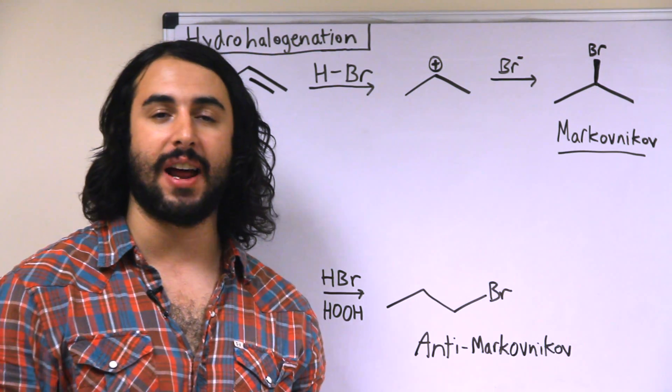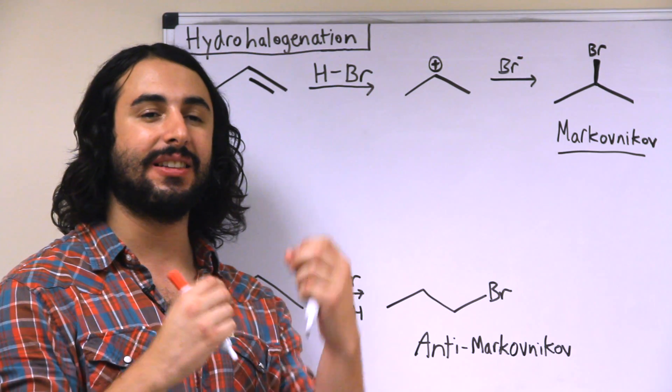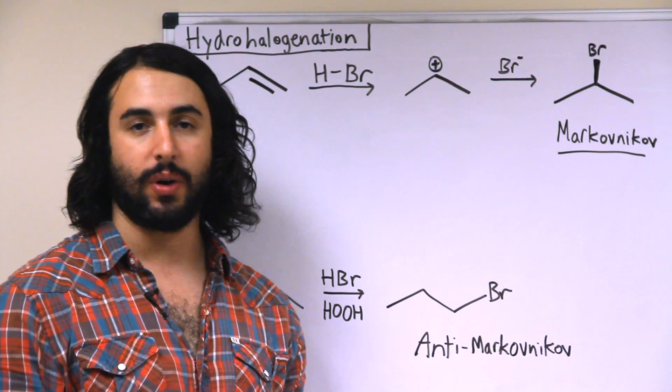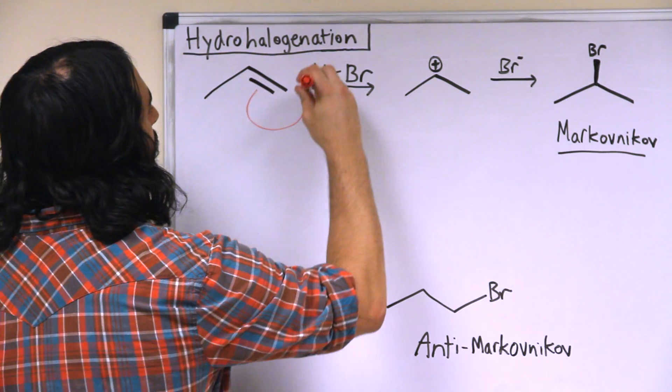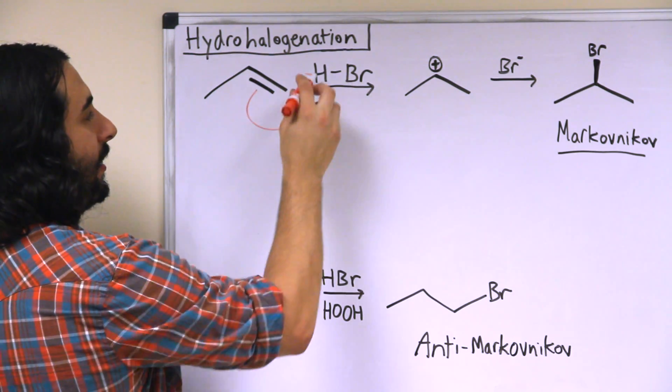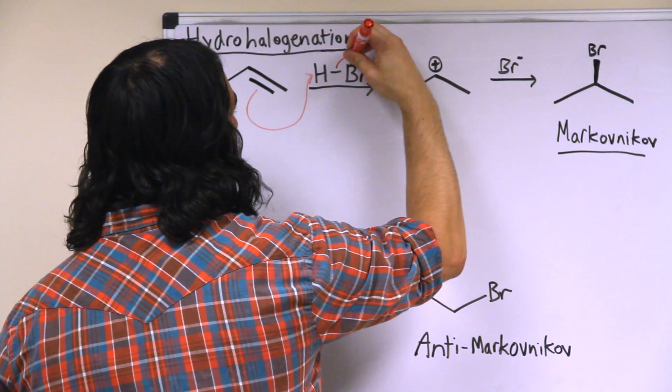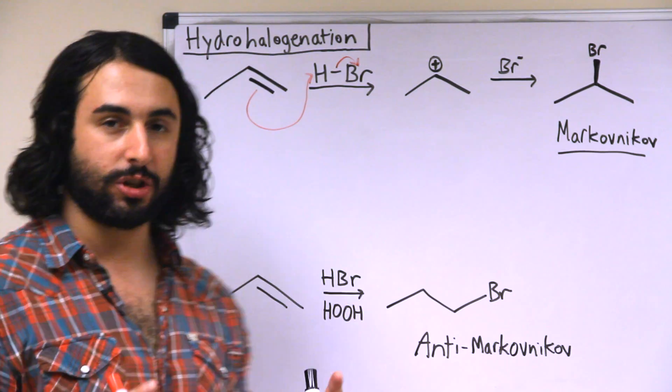What we're seeing now is that a pi bond can behave as a nucleophile. It is electron density that is polarizable and so it can attack an electron-deficient species like a proton. So here goes the pi bond going to attack that proton and then those electrons stay with the bromine. Now here's the question.